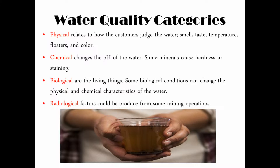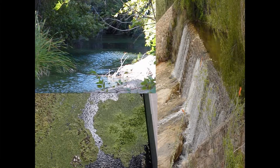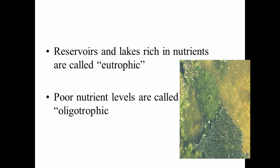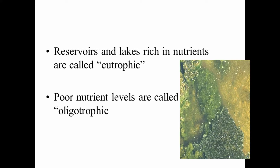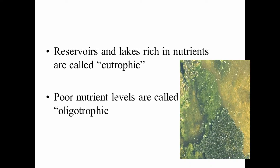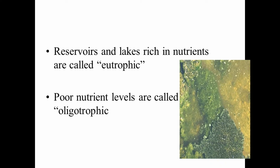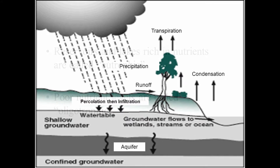If you're in Arizona it's too hot, or turbidity. When you look at this picture you can imagine what effects it would have on taste, odor, and color. We refer to those conditions as eutrophic, which is rich in nutrients, and the opposite — poor in nutrients — would be called oligotrophic.